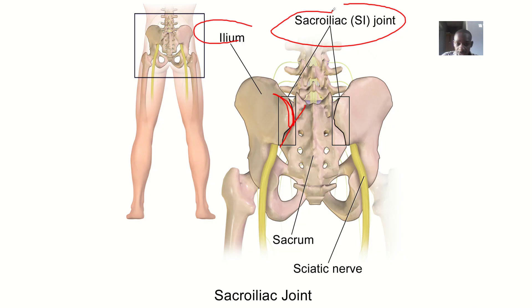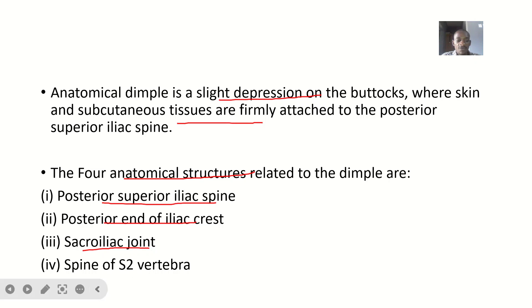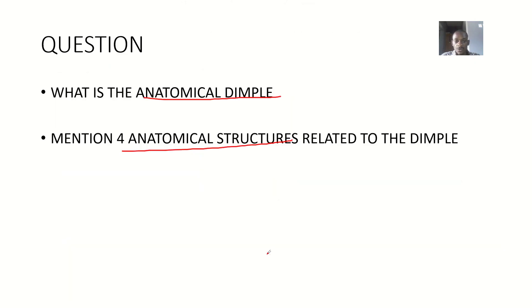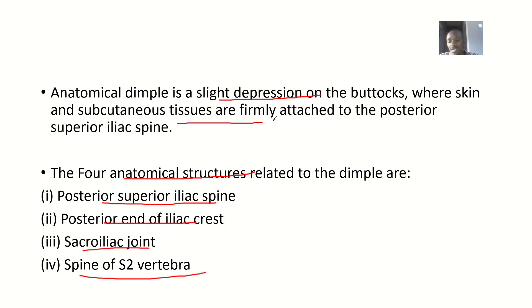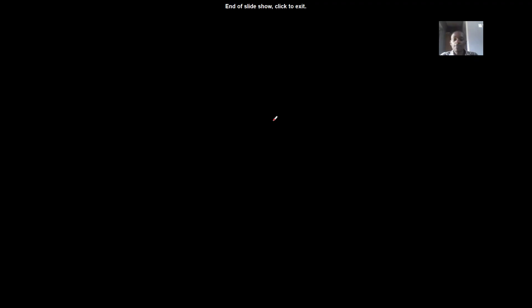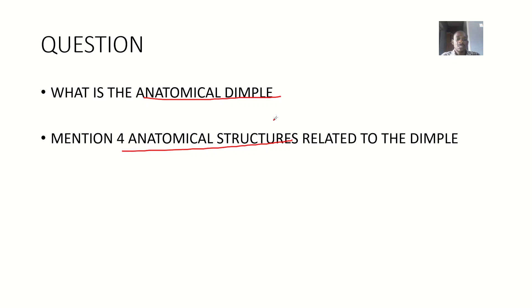And lastly, we have the spine of the S2 vertebra — the second sacral vertebra. So the spine of the second sacral vertebra is also related to the anatomical dimple or lumbar dimple. Those are the four structures related to the anatomical dimple.